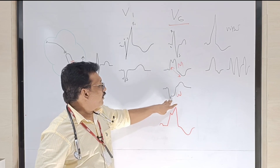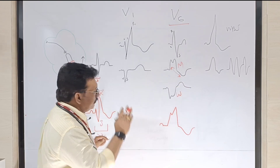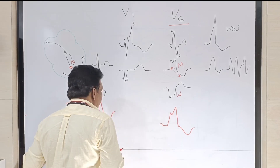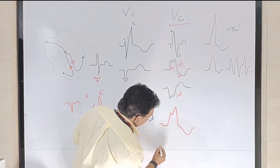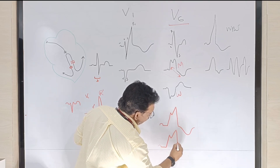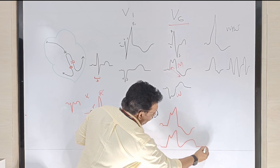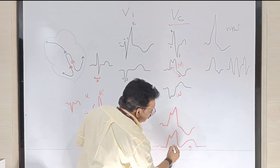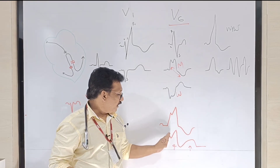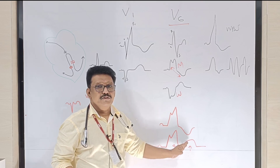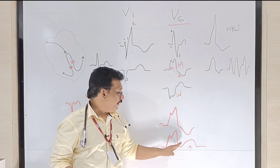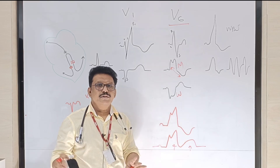If you see an M pattern in V6 where the QRS is upright and the T wave is also upright — both on the same side — this is called a concordant pattern. Concordance means QRS and T wave are on the same side. This is typical of myocardial infarction. When you find a concordant pattern in LBBB, it is due to ischemic heart disease.